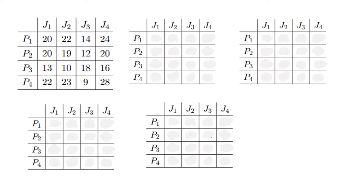In this example we have four people indicated by P1, P2, P3, P4, and then four jobs that those four people are to be allocated to, labeled in the columns as J1, J2, J3, J4. The values in the table represent how long it takes each person to complete each job. For example, person one takes 20 minutes to complete job one, 22 minutes for job two, 14 for job three, and 24 minutes for job four. Our job is to perform the Hungarian algorithm to allocate which person does which job to minimize the amount of time — it's all about efficiency.